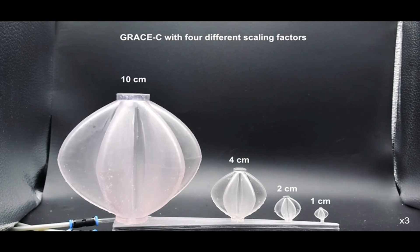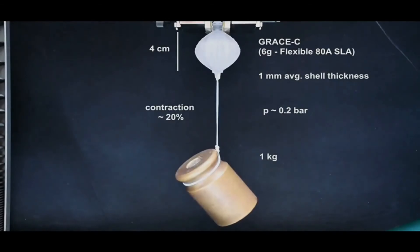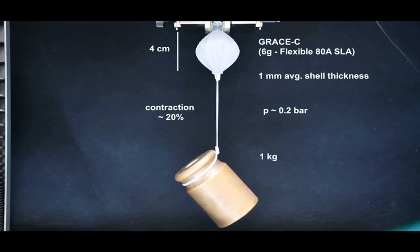They tested GRACE in different circumstances, based mostly on size. They built one actuator, for example, that was just one centimeter across and another one that weighed just 8 grams, added it to a grasper, and found it capable of lifting up to 8 kilograms.